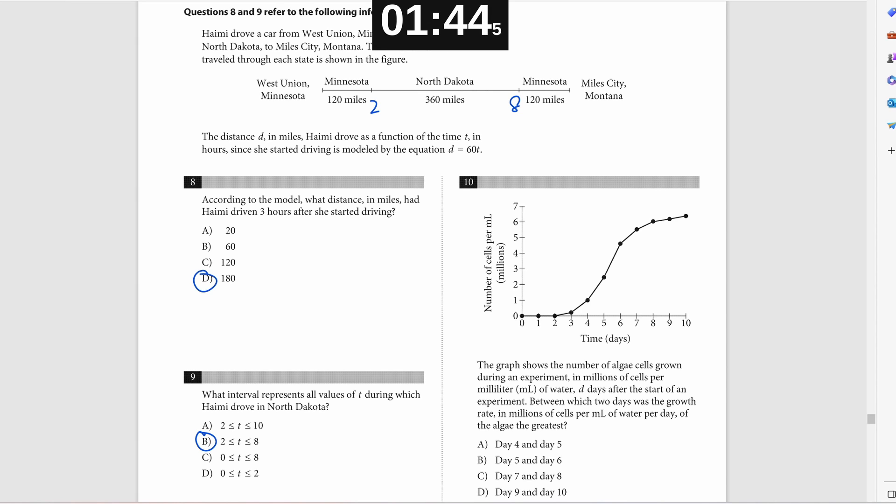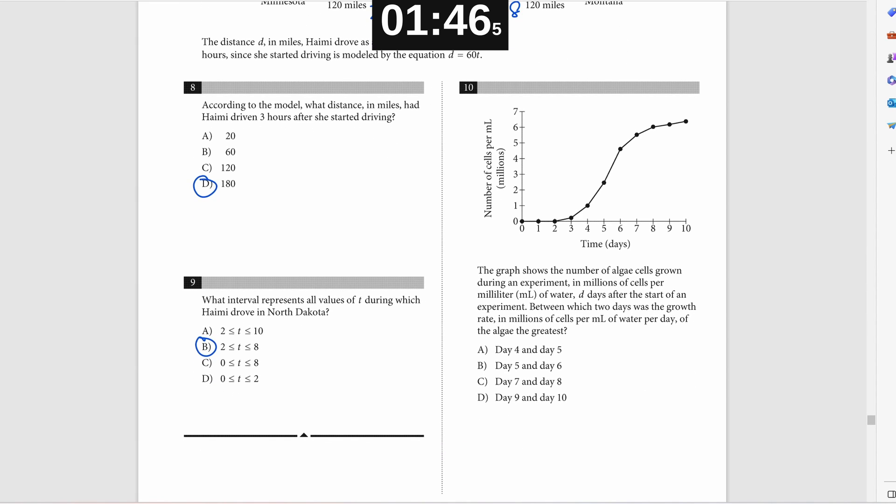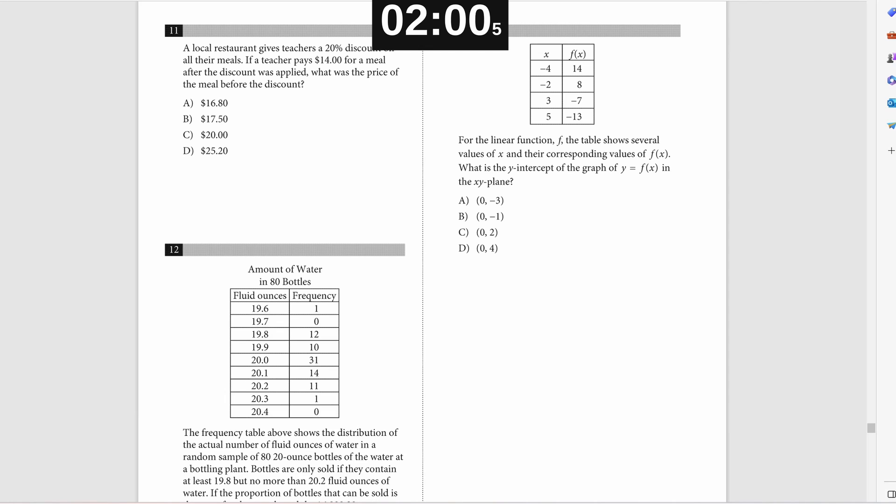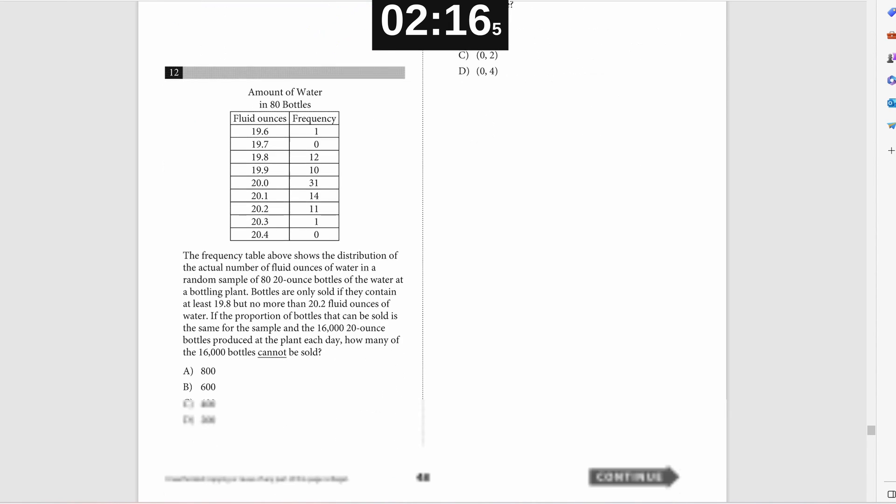Problem number 10, you're looking for the greatest rate of increase. So that's when the slope is the greatest. And that's the case between days five and six. Number 11, you get a 20% discount on meals. If it's $14 after the discount, that means the original price times 0.8 is going to be 14, 0.8 being one minus 0.2, the percentage discount. And then solving for X with a calculator.